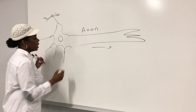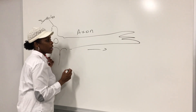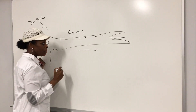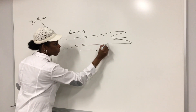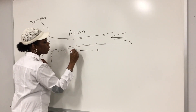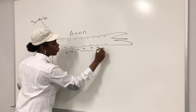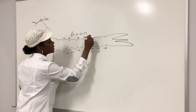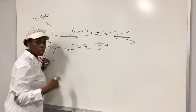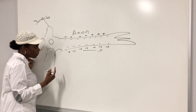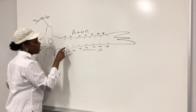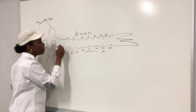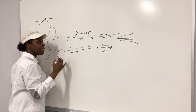What I'm trying to explain today is how that happens — how it happens inside a neuron. If you look at the neuron, the inside of the neuron is negative and the outside is positive. The proteins inside the neuron have negative charges around them, so it makes the cell negative.